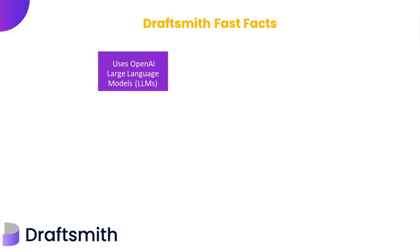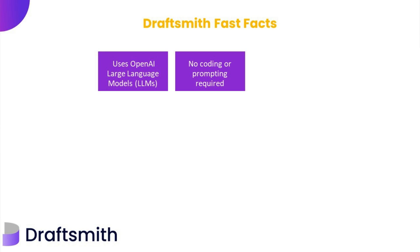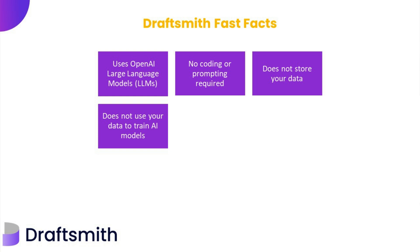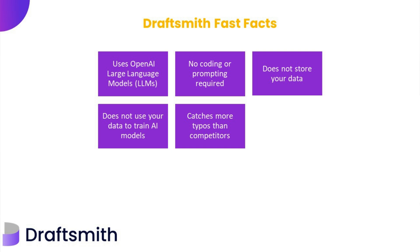First, it uses OpenAI's large language models to help you: one, find typos, and two, redraft sentences as needed — to help you harness the power of AI without having to use ChatGPT or do any sort of prompting. Next, it does not keep your data, and it does not use your data to train or build AI models. Next, it helped me catch 70% more typos than Grammarly, Microsoft Word, and ProWritingAid combined, and the errors it helped me catch were not caught by the previously mentioned apps — and I have receipts and proof later in the video.